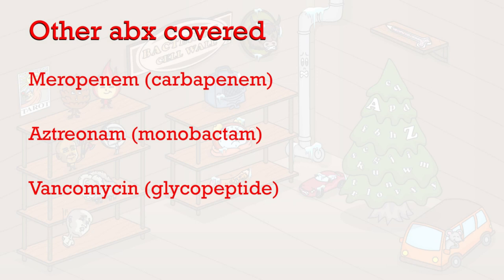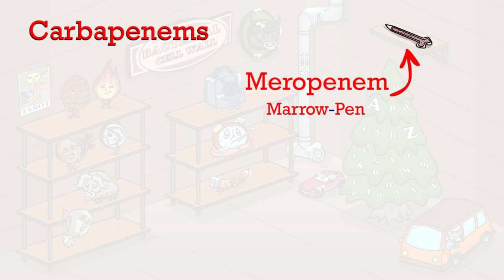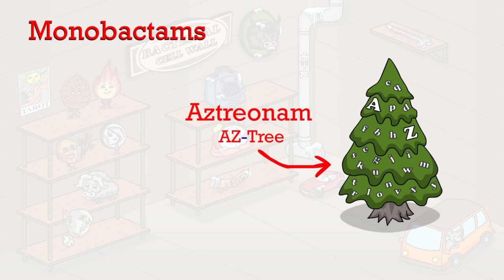Meropenem and aztreonam are both beta-lactam antibiotics, so their mode of action is similar to penicillins and cephalosporins. The bone with the marrow showing, shaped into a pen, represents meropenem. The A-Z alphabet tree represents aztreonam.